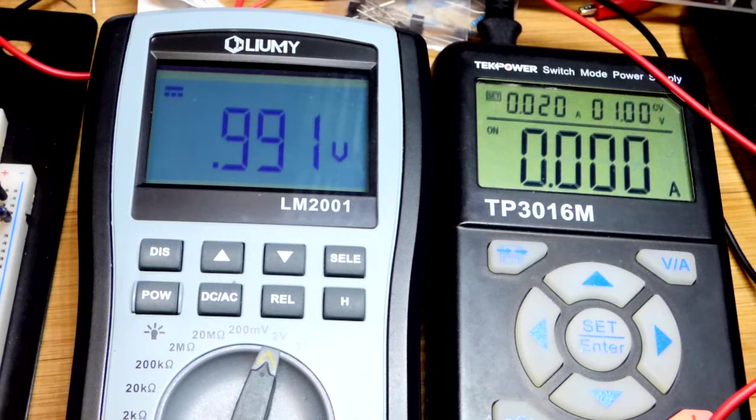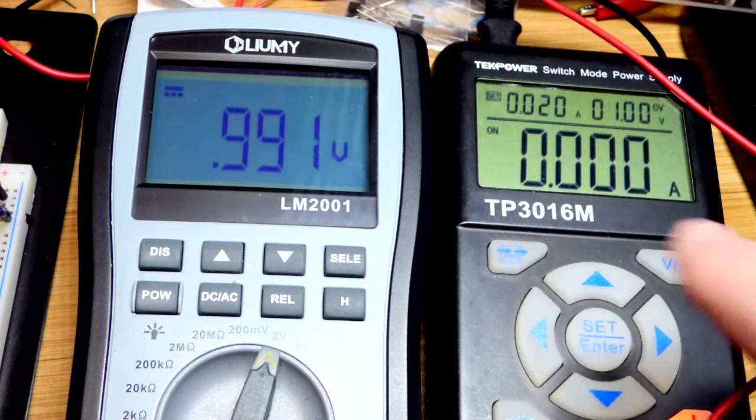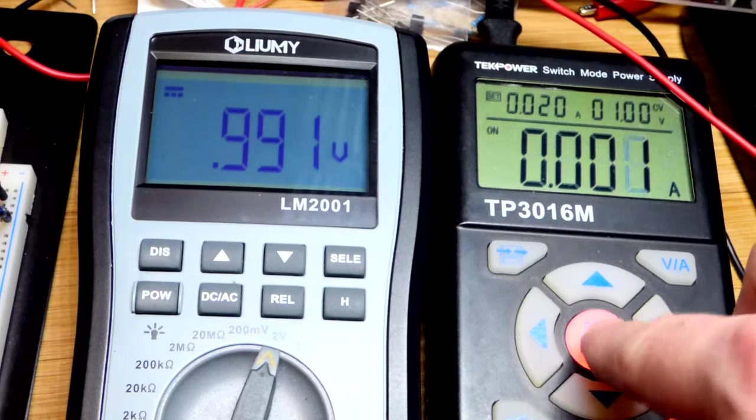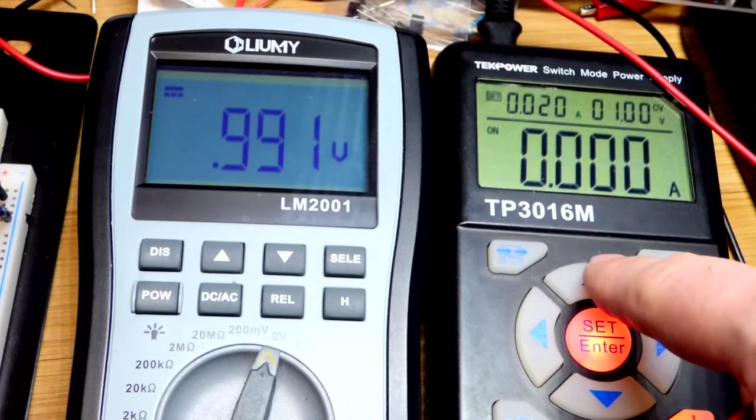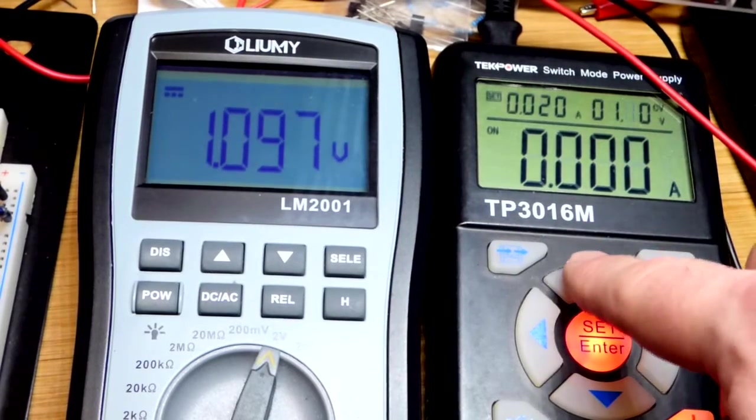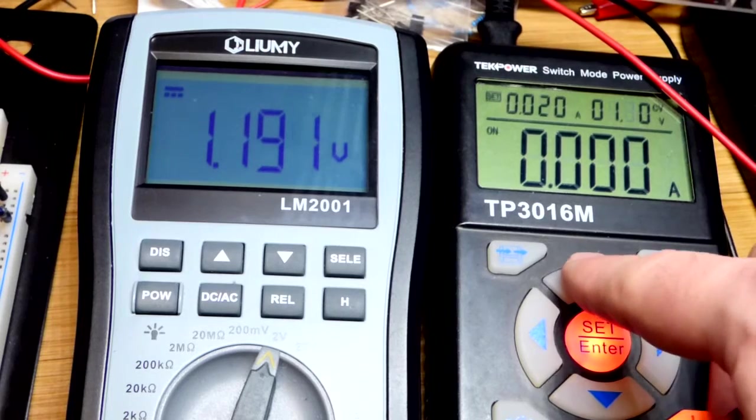There you can see we have 0.991 volts, almost 1 volt. This display kind of goes erratic at 1 volt for some reason. You can see that's probably more accurate, the voltage, than what's on the display there.